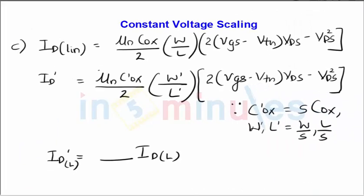Let's move on to ID linear. The equation of ID in the linear region is given by transconductance divided by 2, times W divided by L, times twice VGS minus VTN times VDS, minus VDS squared. Let's see what happens in constant voltage scaling.